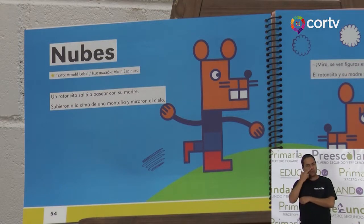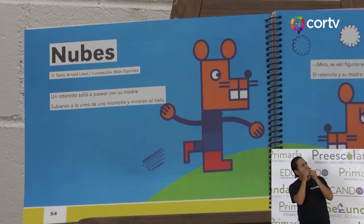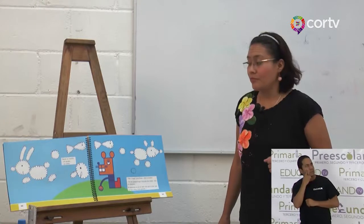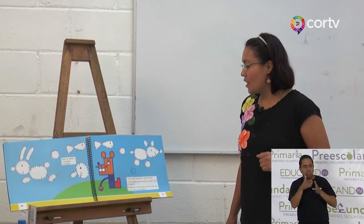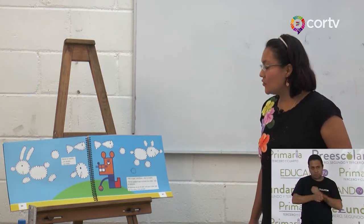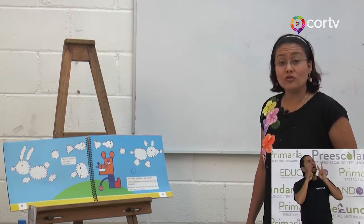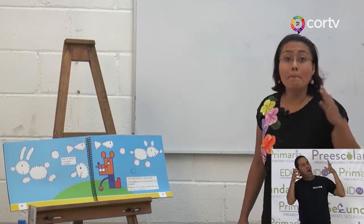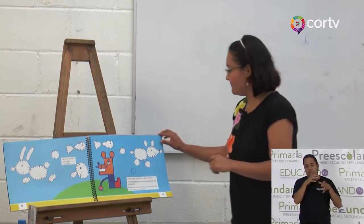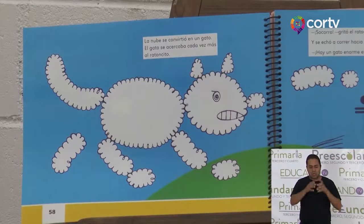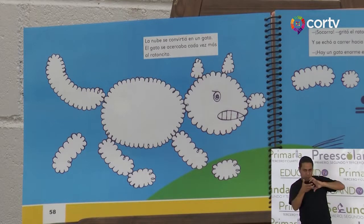El ratoncito y su madre vieron muchas figuras. Vieron un castillo, un conejo, un ratón. Voy a coger unas flores, dijo la madre. Yo me quedaré aquí mirando las nubes, dijo el ratoncito. El ratoncito vio en el cielo una gran nube que se hizo más y más grande. La nube se convirtió en un gato. El gato se acercaba cada vez más al ratoncito.